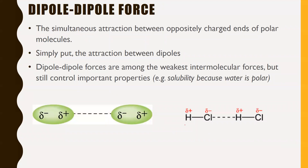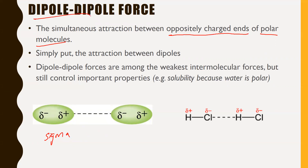The first type is dipole-dipole forces — the simultaneous attraction between oppositely charged ends of polar molecules. Dipole-dipole forces only occur in polar molecules. It's simply the attraction between a positive dipole and a negative dipole, and it works like electromagnetism. Dipole-dipole forces are among the weakest intermolecular forces, but they still control important properties like solubility, because water is polar and only other polar things will dissolve in it.